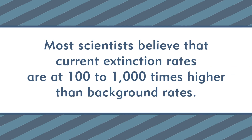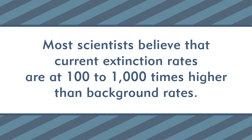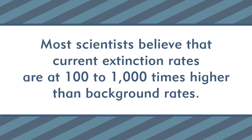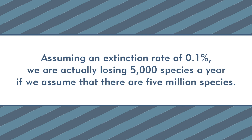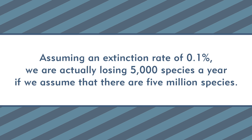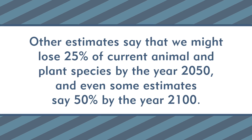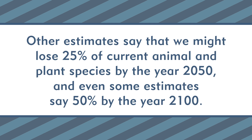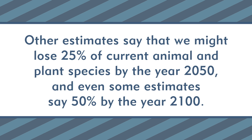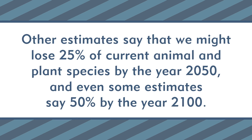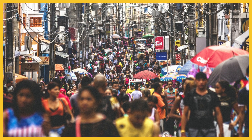Most scientists believe that current extinction rates are 100 to 1,000 times higher than background rates. Assuming an extinction rate of 0.1% — which is more on the conservative side — we're actually losing 5,000 species a year if we assume there are 5 million species. Other estimates say we might lose 25% of current animal and plant species by the year 2050, and even some estimates say 50% by the year 2100. One thing we're pretty sure about is that extinction rates right now are increasing, and the growth of the human population will increase this loss.